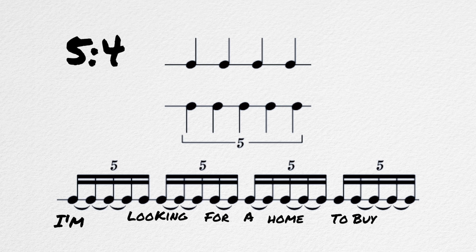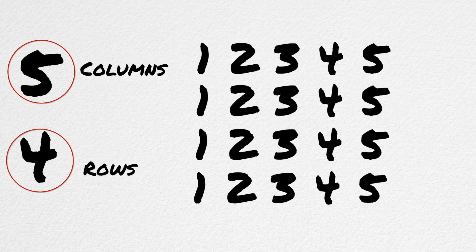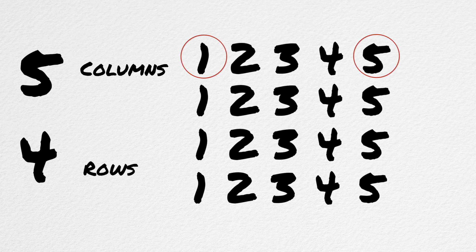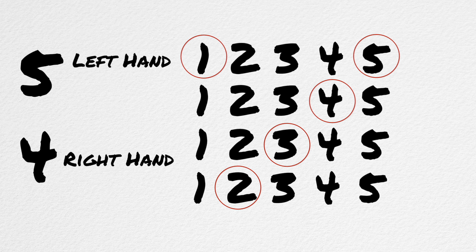So, from five against four and beyond, I think it becomes easier to take a different approach to learn polyrhythms. There are two different charts that can be used. The first is: we take the larger number and write out that many columns, and then we take the smaller number and write out that many rows. So for five against four, we get a chart that looks like this. Starting in the upper left-hand corner on the first number, we circle it, and then draw a circle every four numbers throughout the chart until it lines up again. The left hand will play on every one, and the right hand will play every time there is a circle.